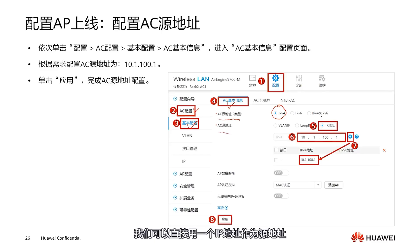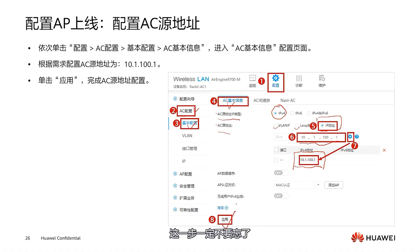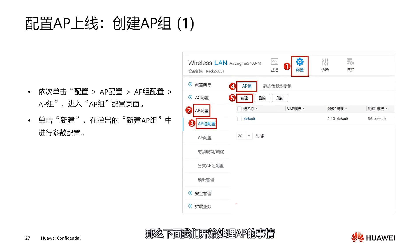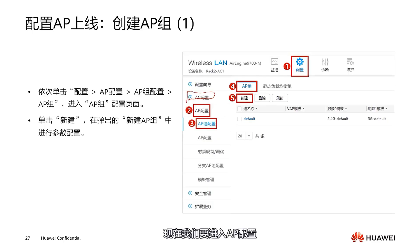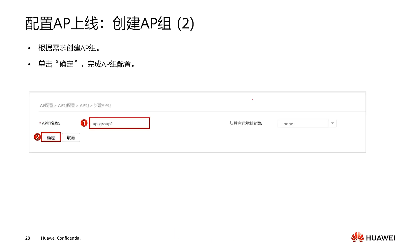Next, we need to configure the AC source address. In the basic configuration of AC configuration, under AC basic information, we choose the type as IPv4 for the AP source address. Here we use 10.1.100.1 as the source address — you can also use a loopback or VLAN IF as the source address. Click the plus sign to write the address to our device, then click Apply. Don't forget this step — changes will not take effect until Apply is clicked.